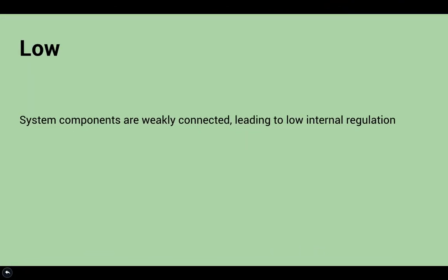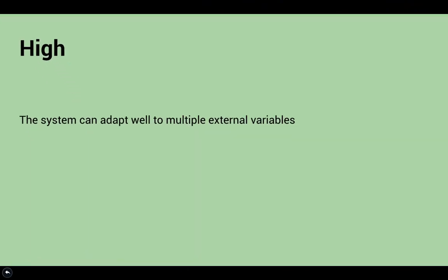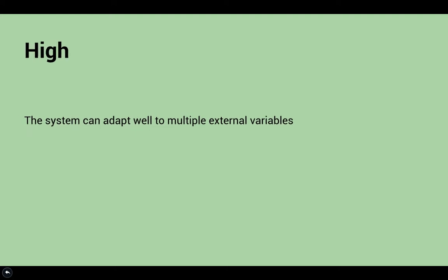The connectedness in the R phase is low as well. Since the system is only just being established at this phase, no strong internal connections have been formed. However, the resilience of the system at this stage is high — because of the few internal connections, it's easy for the system to adapt to external variables.